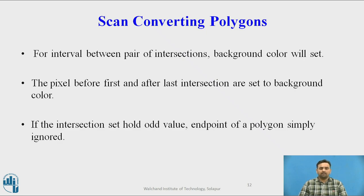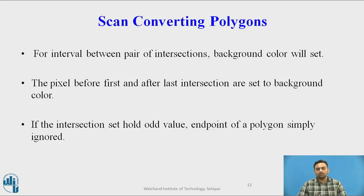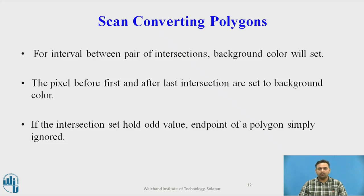Between pairs of intersections, the background color is set because those regions are outside the polygon and are marked with the background color. Before the first intersection and after the last intersection, there is no intersection, so those regions are also considered outside the polygon and marked with background color. If a certain scanline has three or five intersections — that is, an odd number of intersections — then it is certain that a particular intersection is one of the endpoints of the polygon, and we have to ignore it.